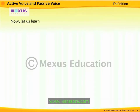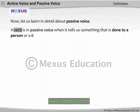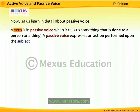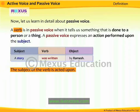A verb is in Passive Voice when it tells us something that is done to a person or a thing. A Passive Voice expresses an action performed upon the subject. For example, 'A story was written by Ramesh.' The action of writing is performed upon the subject story. The subject of the verb is acted upon, and the object is the doer of the action.